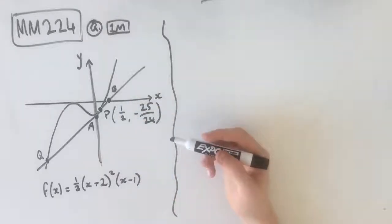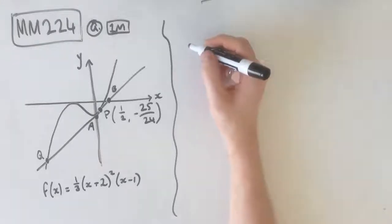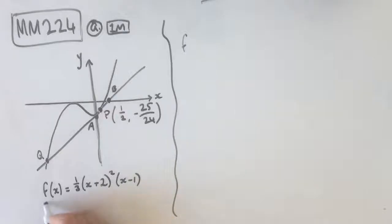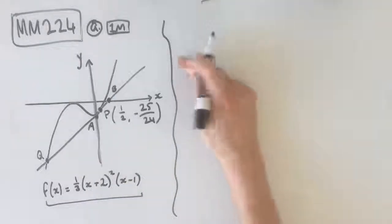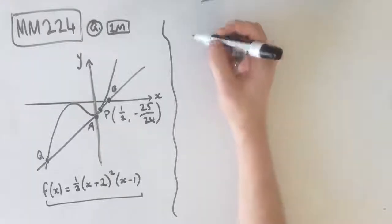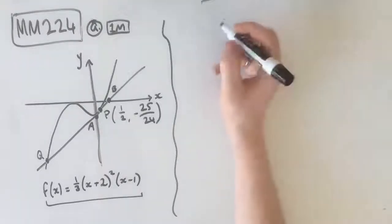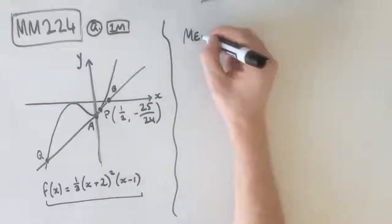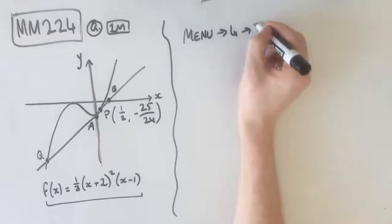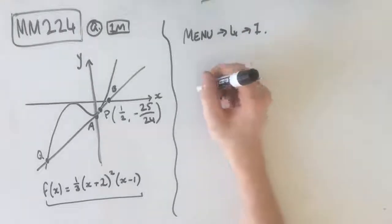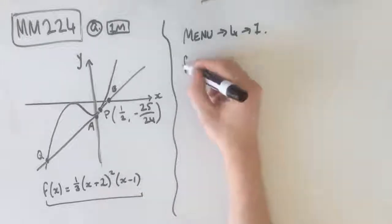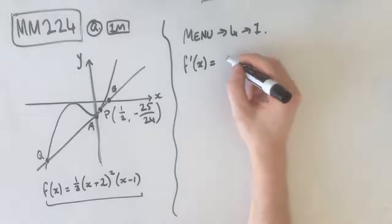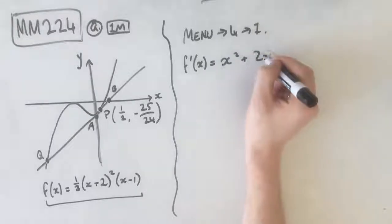Now, in part A, we need to find the rule for f'(x), the gradient function of f(x). We know that f(x) equals this, and because this is a one-mark question, we can simply just put it in our CAS and find the derivative that way. Simply type menu 4, 1, and that gets us to our derivative section. We type this in and we end up getting f'(x) equals x² + 2x.